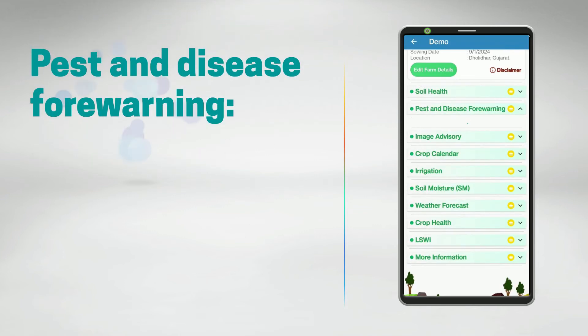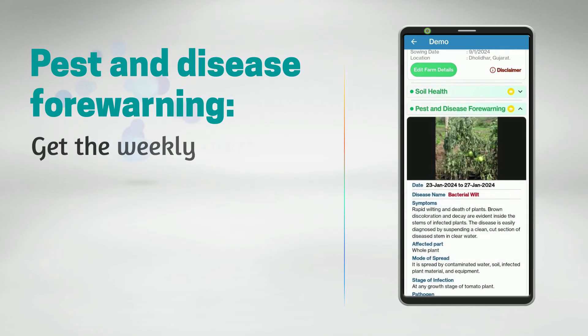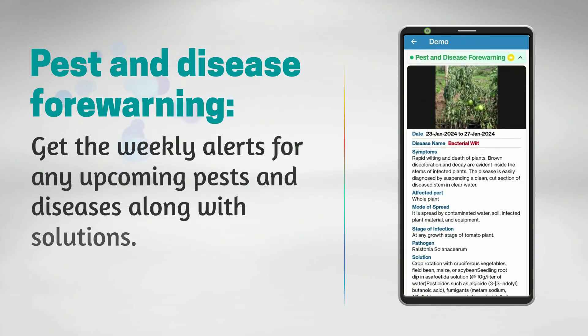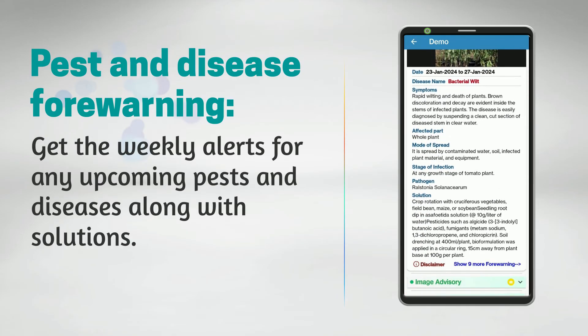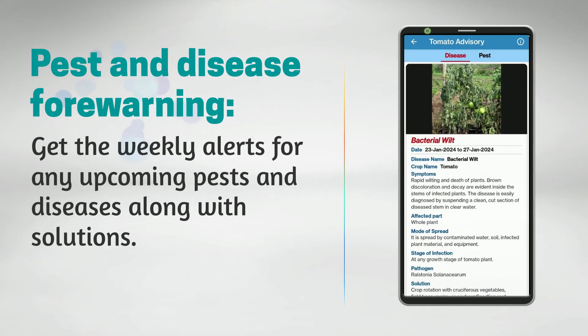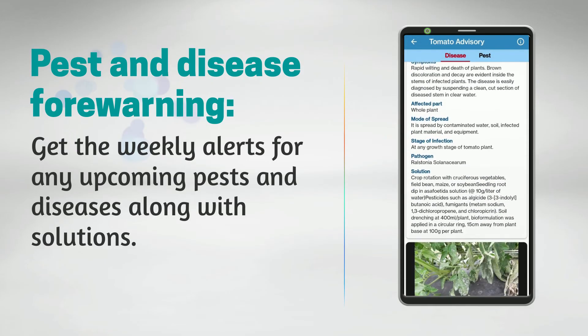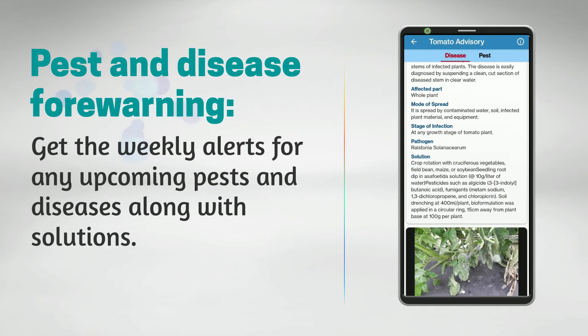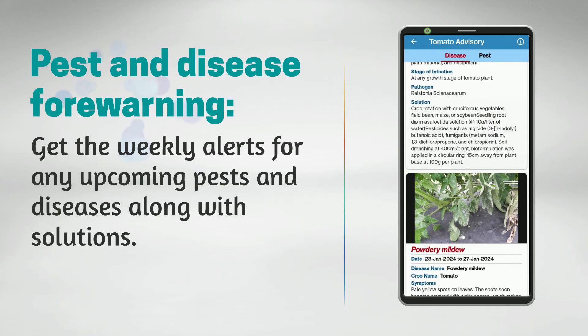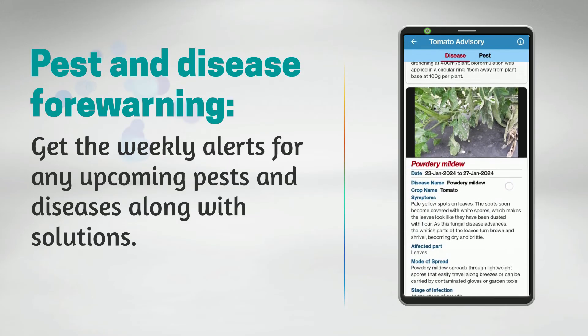Pest and Disease Forewarning: This feature provides information on multiple diseases or pests affecting the individual crop, including symptoms, affected part, mode of spread, stage of infection, and its effective solution.